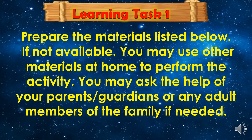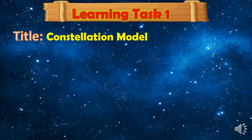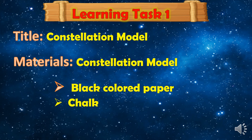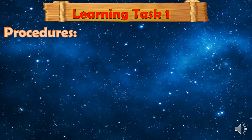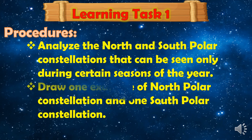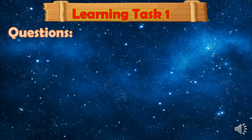Let us answer Learning Task 1. Prepare the materials listed below. If not available, you may use other materials at home to perform the activity. You may ask the help of your parents, guardians, or any adult members of the family if needed. The title of the activity is Constellation Model. Materials needed are black colored paper and chalk. For the procedures: First, analyze the north and south polar constellations that can be seen only during certain seasons of the year. Next, draw one example of a north polar constellation and one south polar constellation.